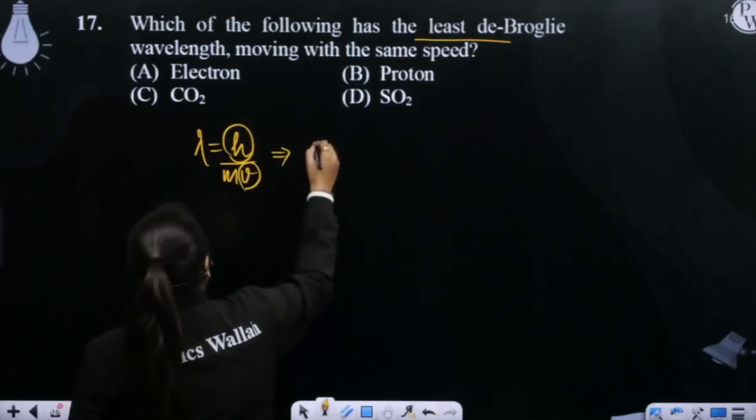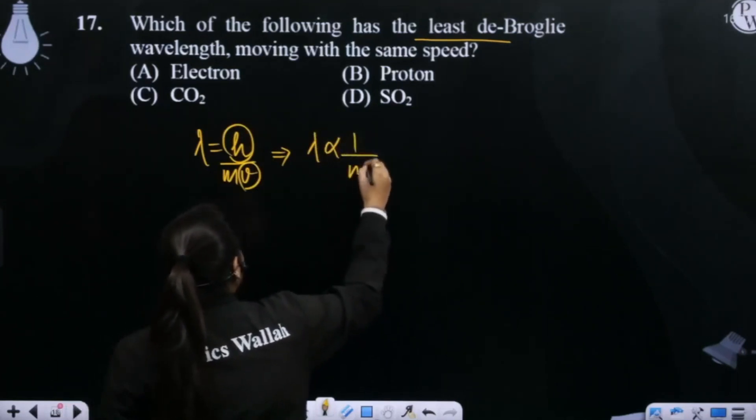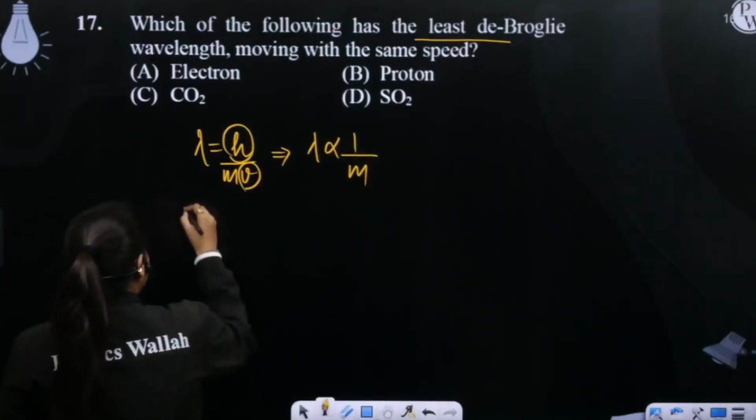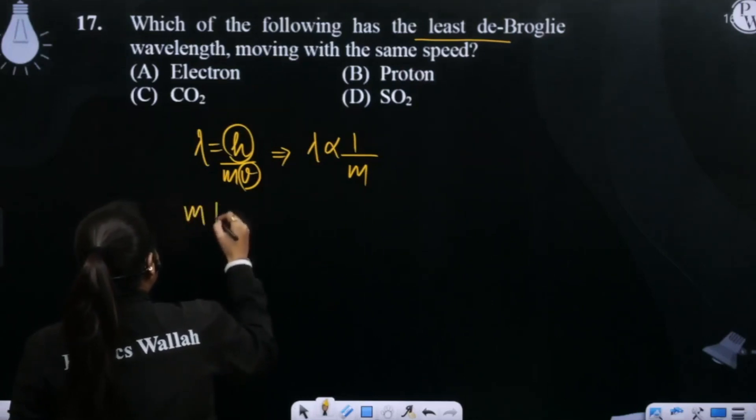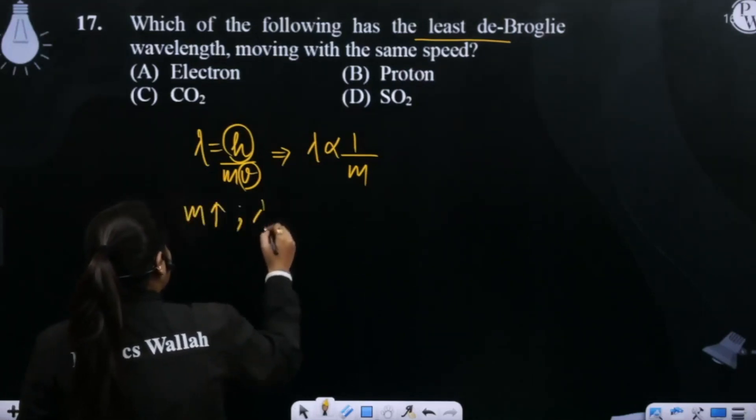This means lambda, the de Broglie wavelength, is inversely proportional to mass. So that means, which of the mass will be maximum, the de Broglie wavelength will be minimum.